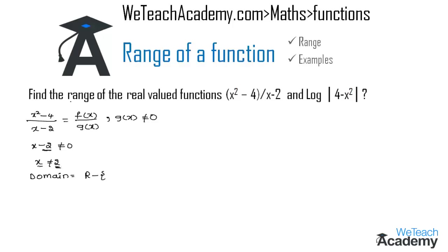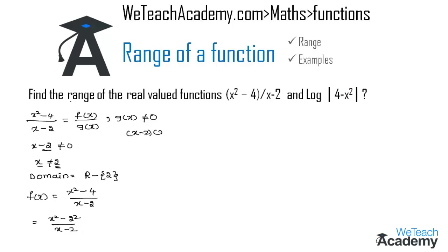Now let us find the range of the function. Let f(x) equal x squared minus 4 divided by x minus 2. Since 4 is a perfect square with root 2, we can write the numerator as x squared minus 2 squared. Applying the difference of squares formula, a² - b² = (a-b)(a+b), we get (x - 2)(x + 2) divided by (x - 2).